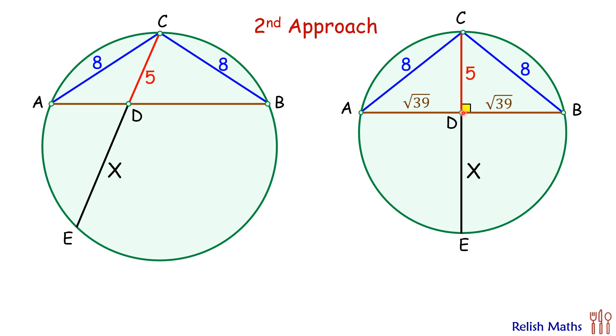Now using the intersecting chord theorem or power of point theorem we get that CD times DE is AD times DB. Putting the values here, CD is 5, DE is X, and AD and DB are square root 39. Solving it will get value of X as 7.8 cm and that's our answer.